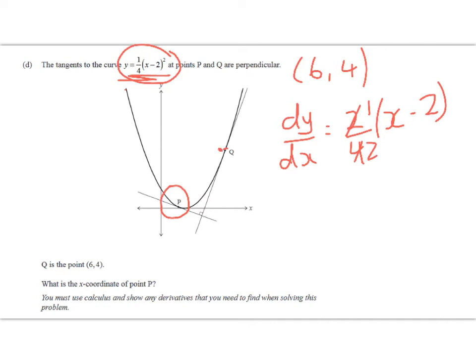So the first thing we're going to do is work out, what's the gradient of the tangent at Q? So at Q, dy/dx is going to be equal to 1/2 times (6 - 2), right? So all I'm doing is I'm substituting in my x value for this point here, and that equals 1/2 of 4, which is just 2.